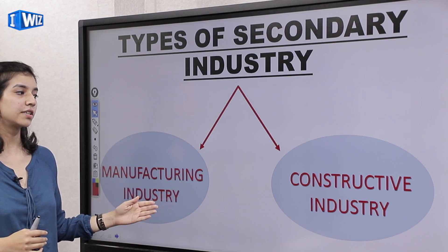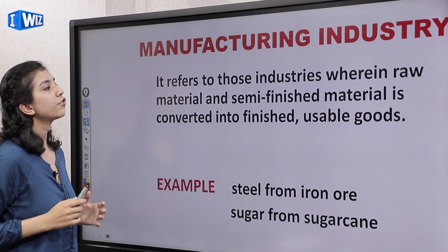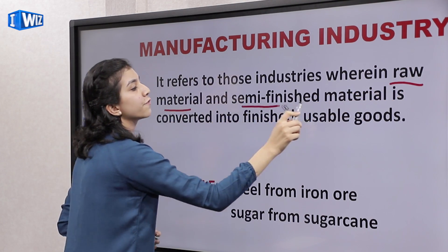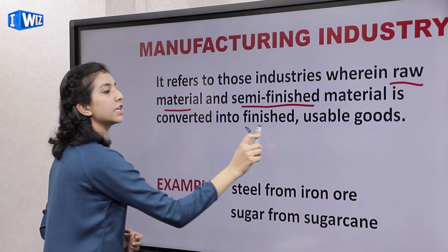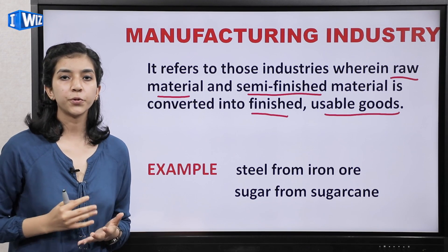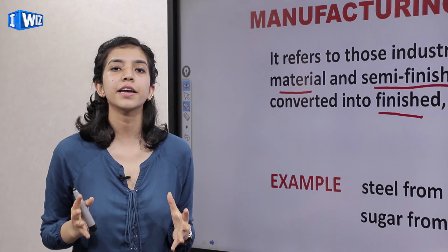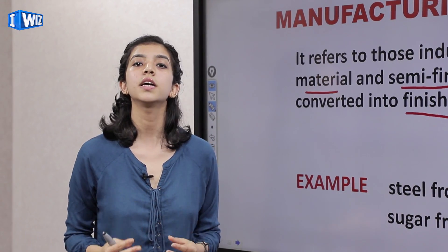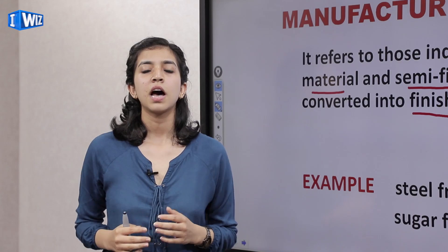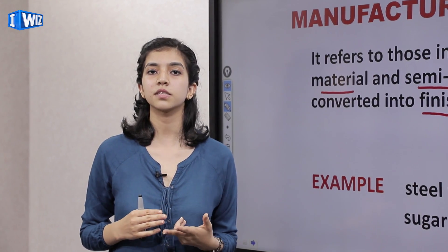The secondary industry also has two types. The first one is manufacturing industry and the second one is constructive industry. What is a manufacturing industry? It refers to those industries wherein raw material and semi-finished material is converted into finished usable goods — it comes from a raw input to a final product. For example, steel from iron ore — iron ore is processed in the manufacturing industry. The second example is sugar from sugarcane, and while sugarcane is processed, a lot of by-products are taken out: one is sugar, another is other products.